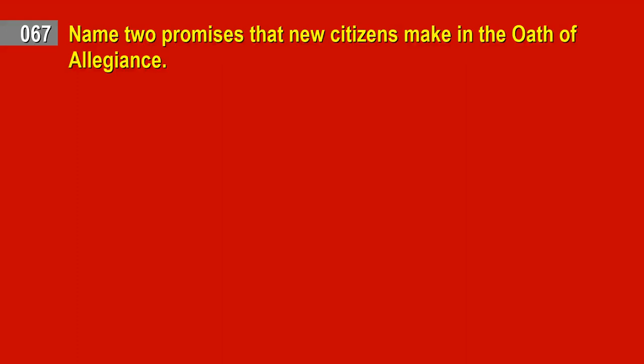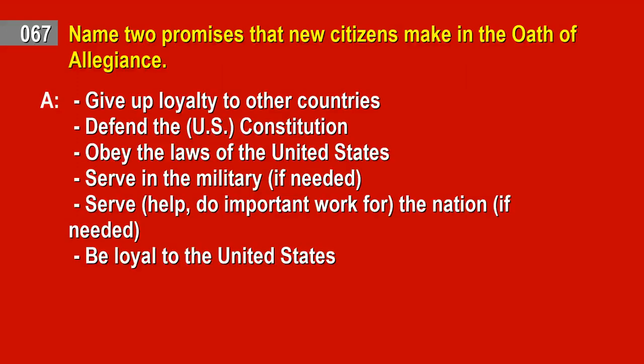Question 67. Name two promises that new citizens make in the Oath of Allegiance. Answer: Give up loyalty to other countries. Defend the U.S. Constitution. Obey the laws of the United States. Serve in the military if needed. Serve and help the nation if needed. Be loyal to the United States.